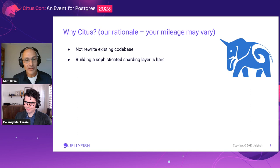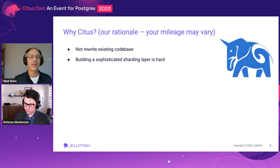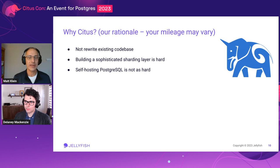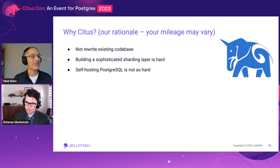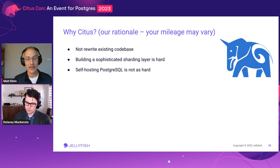Nor could we do nearly as good a job as Citus has done at the hard things about sharding, like handling distributed tables, reference tables, resharding, query parallelization, distributed transactions, co-location of data, et cetera. On the other hand, moving to Citus would mean giving up hosted Postgres to move to a self-hosted database. AWS RDS doesn't offer hosted Citus or any other hosted distributed relational database. Citus Cloud used to be an offering on AWS but was yanked when Microsoft bought Citus in 2019. So giving up managed hosting is a little scary, but we took the strategy that self-hosting is not as hard as sharding and would be worth it.